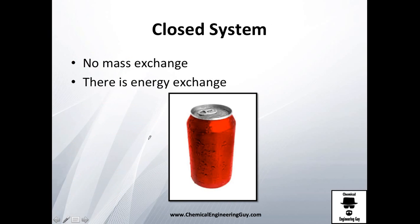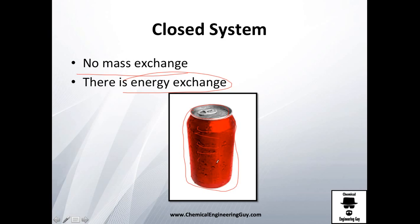A closed system is essentially one where there's no mass exchange, but you can exchange energy. For example, let's say you have your soda can here — the material stays inside, but heat can increase or decrease the temperature, so you can actually change heat.